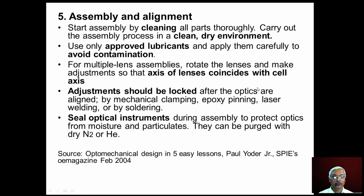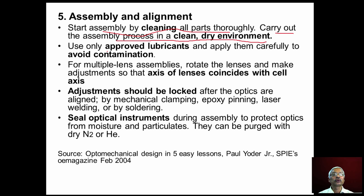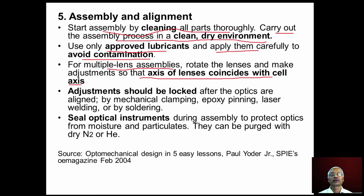The fifth important design decision concerns assembly and alignment of optics inside the mechanical structure. All optical and mechanical parts must be thoroughly cleaned, and assembly must be carried out in a clean and dry environment using approved lubricants applied carefully to avoid contamination. For multiple lens assemblies, lenses are rotated and adjusted until the axis of lenses coincides with the cell axis, using either a manual lens assembling process or automated alignment stations.